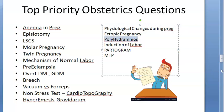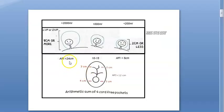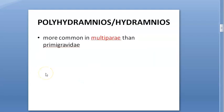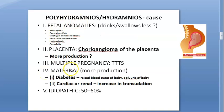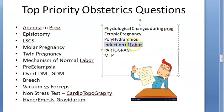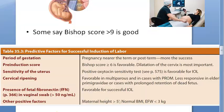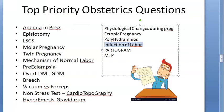Polyhydramnios: the AFI can be more than 24, or the largest vertical pocket greater than 8 cm. Causes include fetal anomalies, placental abnormality, multiple pregnancy, diabetes, or cardiac and renal causes. Remember mainly diabetes and fetal anomalies. Induction of labor: you induce only when there is a favorable bishop score. A bishop score greater than six - some say greater than nine - is needed before inducing labor.